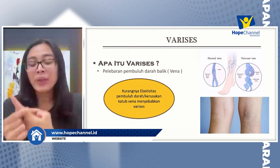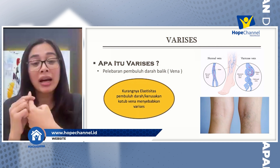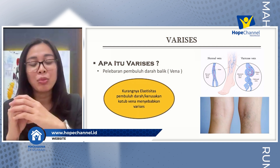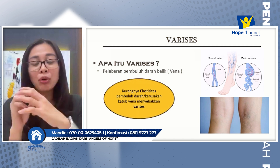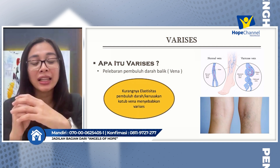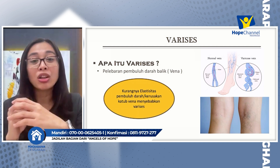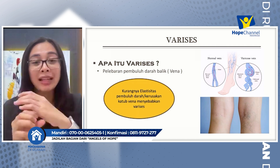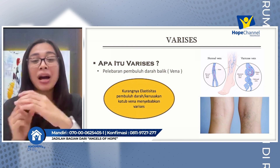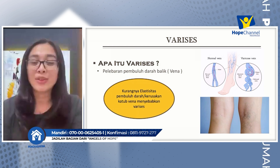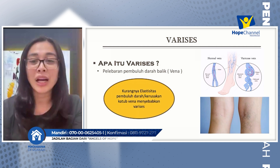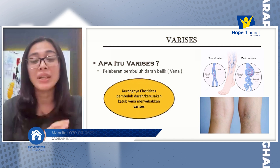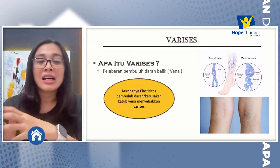Pada pembuluh darah arteri, ini merupakan pembuluh darah yang paling besar pada tubuh manusia. Pembuluh darah ini terdiri dari otot, sehingga pada saat darah mengalir pada pembuluh darah arteri, maka akan terasa seperti ada denyut. Itulah yang disebut dengan pembuluh darah arteri dan letaknya biasanya lebih dalam.